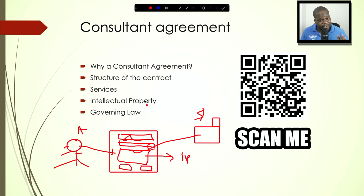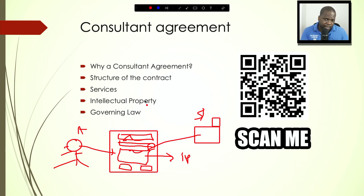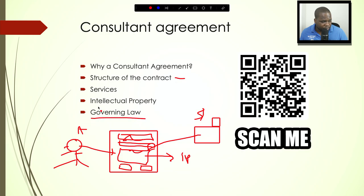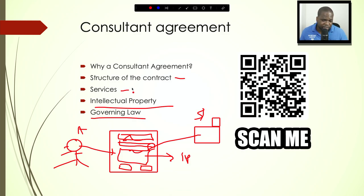Intellectual property matters if you're giving them music or other assets — you want to make clear what kind of permission you are giving them. Governing law is important so that when there is a problem, you know which law applies. Services is also important — make sure you clearly put in the contract what kind of services you are going to offer.